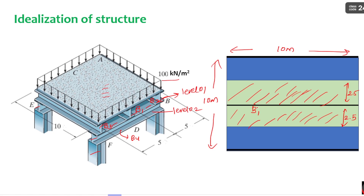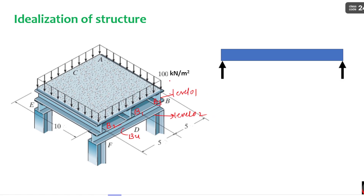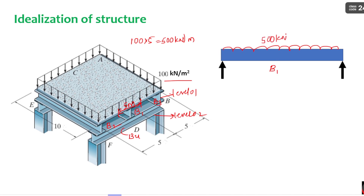Now let us convert the pressure coming onto the B1 beam into a UDL. The width of dispersion for B1 is 5 meters. Multiplying the pressure by this width gives the UDL intensity: 100 × 5 = 500 kN/m. This 500 kN/m acts as a UDL on beam B1. B1 is simply supported on the level 2 beams, and with a span of 10 meters, the reaction at each end is 500 × 10 / 2 = 2500 kN.